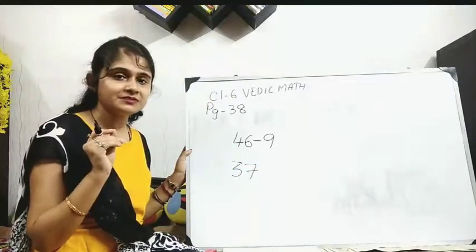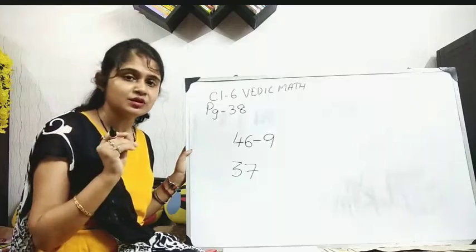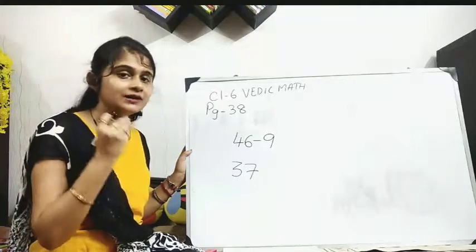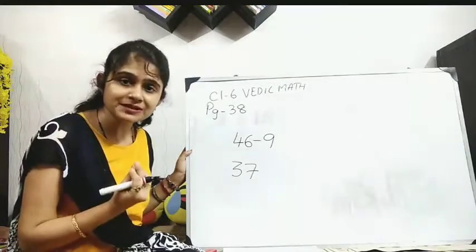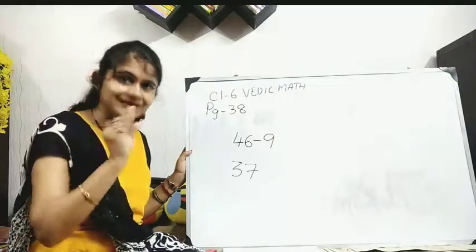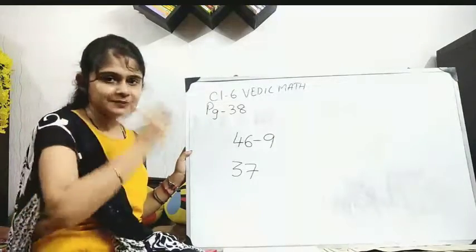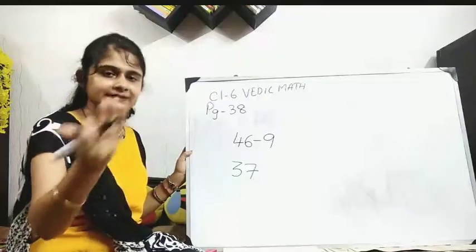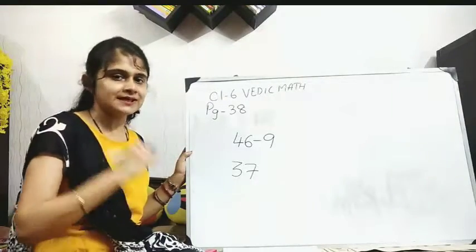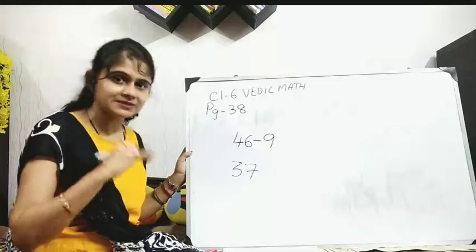You just need to keep in mind complements. You know the complements. You have already got the complements. What are these complements? When you add up, you get the total as 10. 9 plus 1? 10 or 1 plus 9? 10. 8 plus 2 or 2 plus 8? 10. 7 plus 3 or 3 plus 7? 10.